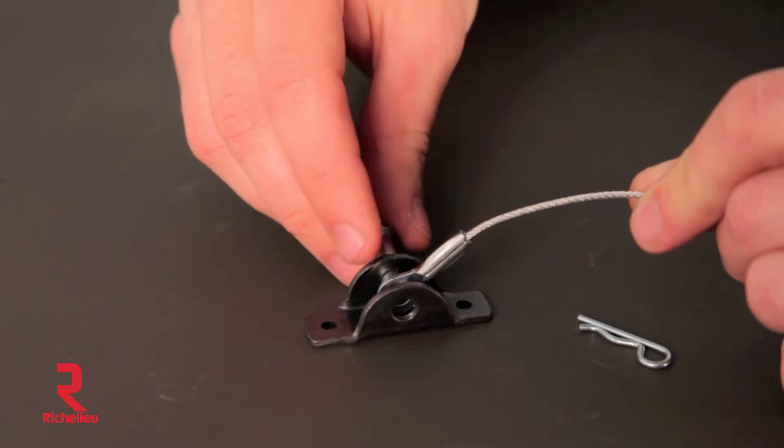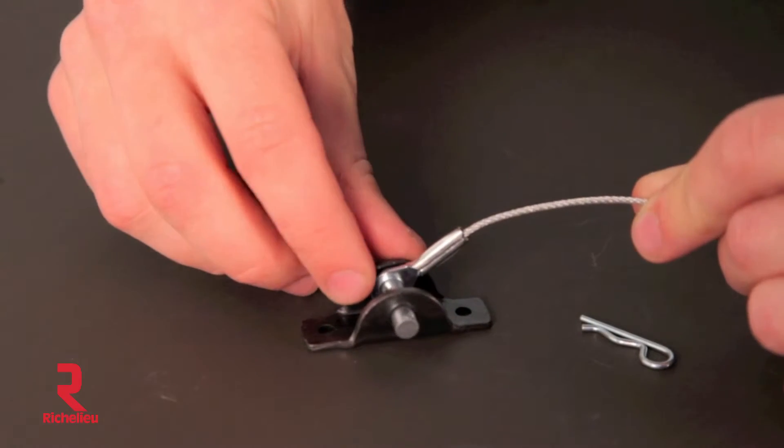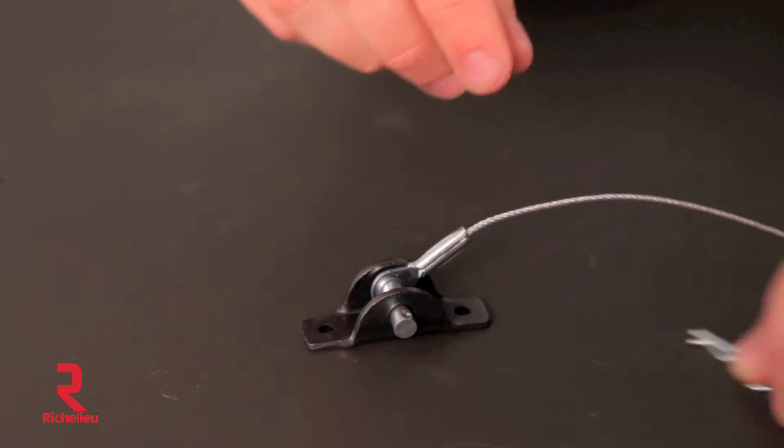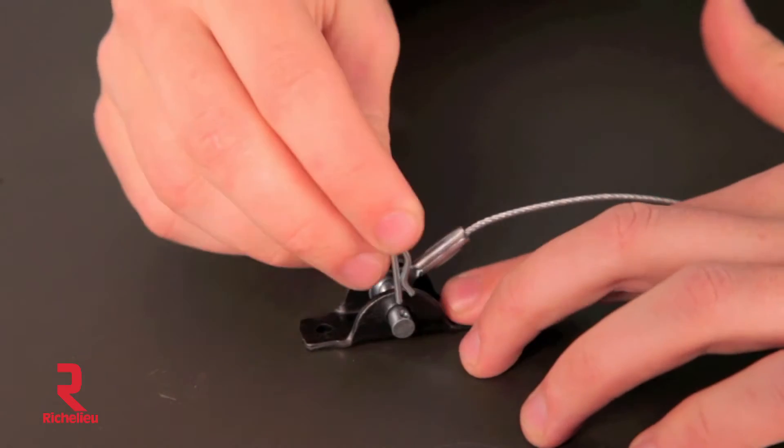Insert steel rod through bracket and eye of cable, then secure with clip.